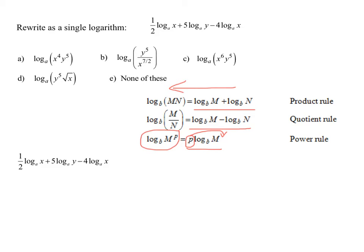So that's what I'm going to have to do with this one half here. I'm going to have to bring it up as an exponent on the x. I'm going to have to bring the 5 up as an exponent on the y, and the 4 up as an exponent on the x. I'm going to leave the negative there. I just need to move the 4.